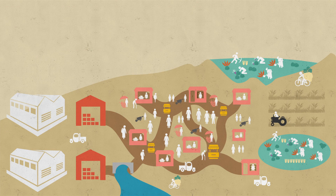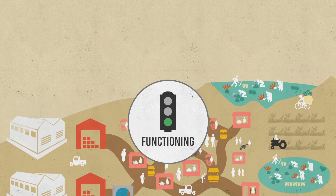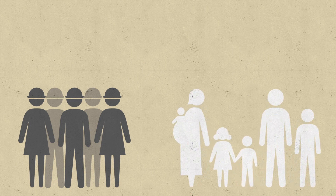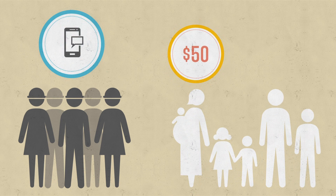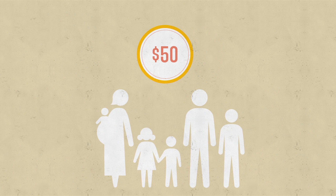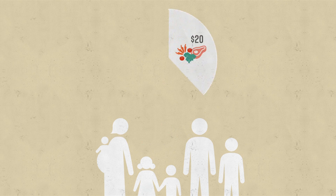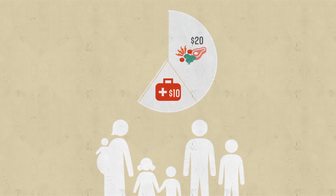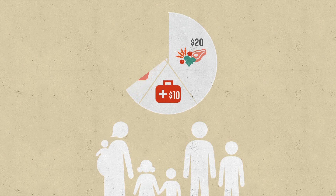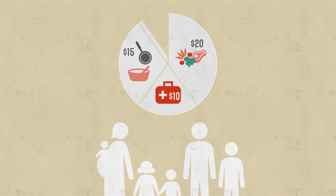Imagine an affected area where the market is functioning after a crisis. Your agency gives targeted beneficiaries a cash transfer of fifty dollars to help them recover from the crisis and replace what they've lost. Let's imagine one of those families sits together and decides how to spend the money. They decide to spend twenty dollars on food including rice, meat, and vegetables; ten dollars on medicine for their daughter; fifteen dollars on household items like soap, toothpaste, and cooking pots which they lost in the emergency — leaving them five dollars which they decide to save for now. That day they go to market and buy what they need.